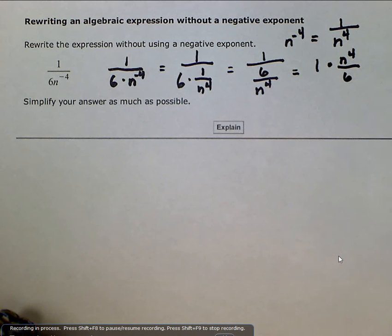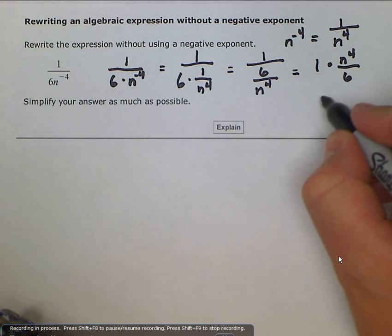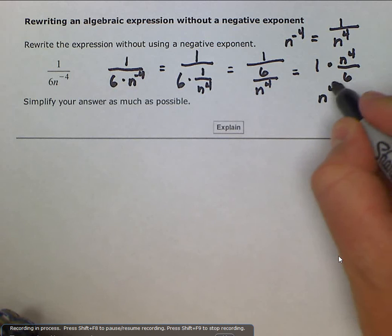And then of course, 1 times anything is just itself. So our final answer is n to the 4th over 6.